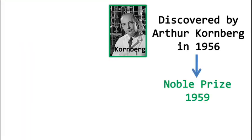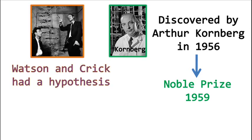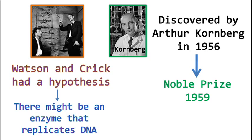DNA Polymerase I was the first DNA polymerase to be discovered by Sir Arthur Kornberg in 1956. When Watson and Crick proposed the structure of DNA in 1953, they had a hypothesis that there might be an enzyme in the cell that could replicate the DNA.